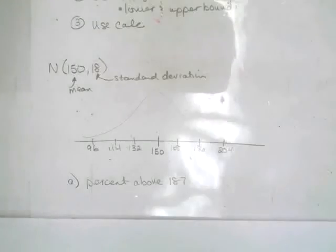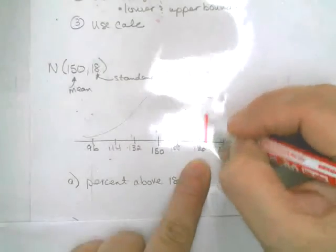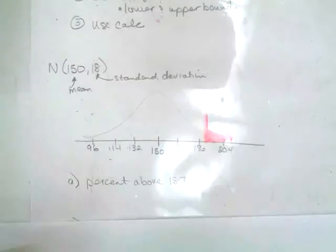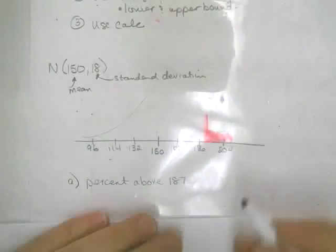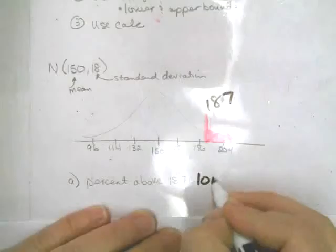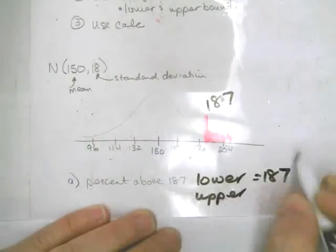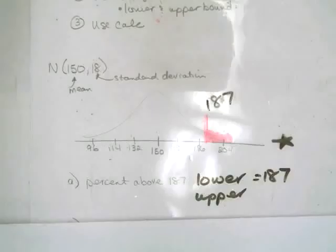What we need to do is find the percent above 187. So 187 is here, I draw my line, and then I shade everything to the right. By doing that, it helps me identify my lower and upper bounds. My lower is 187, and my upper is way out there — I would pick something like 1,000, which is far enough out.